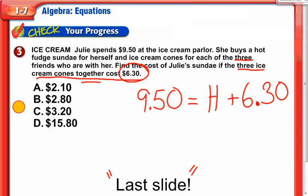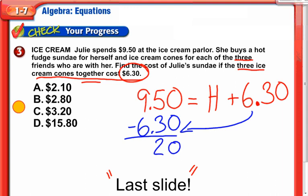Some of you might be thinking to use subtraction to find this — and I agree. You could also solve it mentally, knowing what to add to $6.30 to get $9.50. But I'm going to use subtraction. Subtract away the $6.30: 0, 5 minus 3 is 2, bring the decimal straight down, 9 minus 6 is 3. That gives us $3.20. That must be what the hot fudge sundae cost, and it looks like that's answer C.